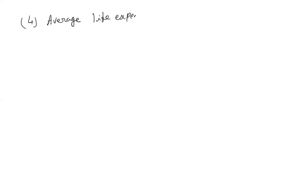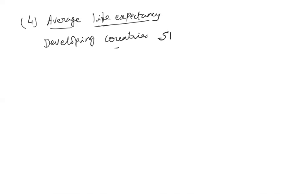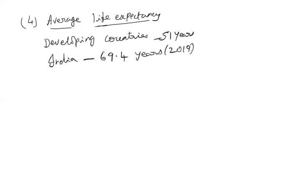The next indicator is average life expectancy. In developing countries it is approximately 51 years. For India as of 2019, it is 69.4 years. In developed countries it is around 75 years on average, and in countries like Japan it is more than 90–95 years.